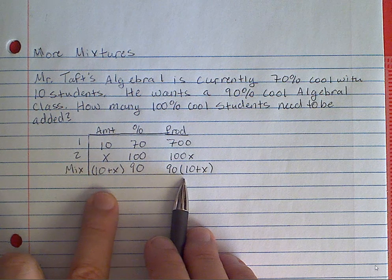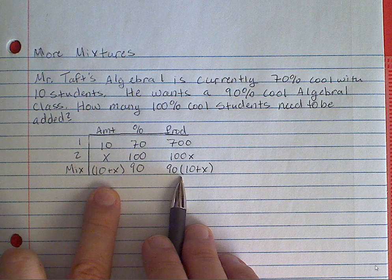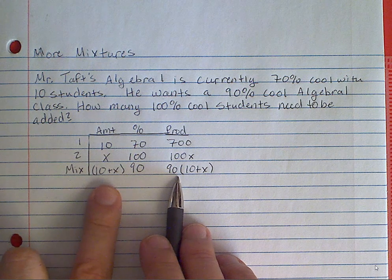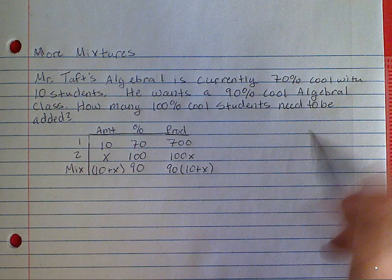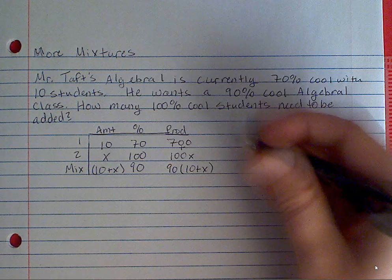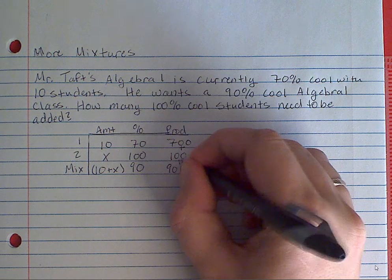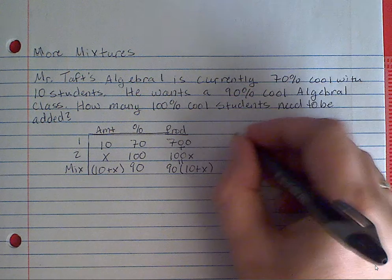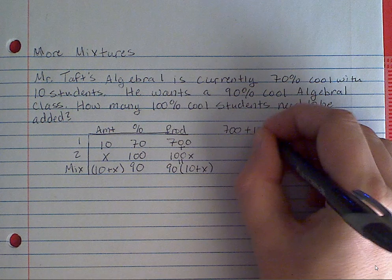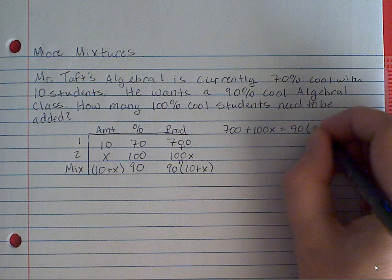This is one of the three points that you're going to get for this kind of problem when it shows up. So I'm going to take this and turn it into an equation now. The equation is the same way: I'm going to do thing 1 plus thing 2 equal to the mixture. So off to the side: 700 plus 100x is equal to 90 times, in parentheses, 10 plus x.